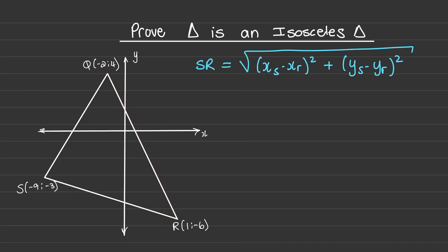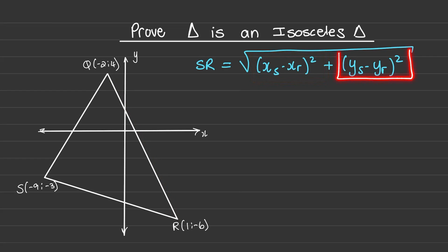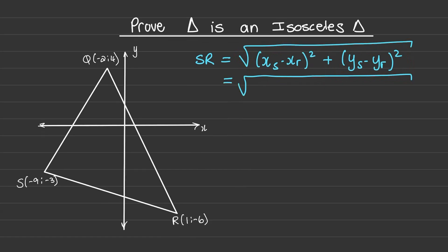The length of SR is equal to the square root of the difference of the x values squared plus the difference in y values squared. When I substitute: